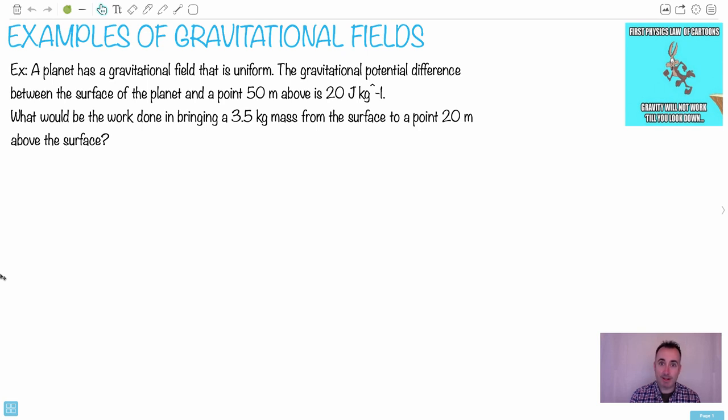Let's actually deal with something that's a real kind of question you could be asked on an exam. A planet has a gravitational field that is uniform. The gravitational potential difference between the surface of the planet and a point 50 meters above is 20 joules per kilogram. That sounds a little bit crazy already. You're probably starting to worry and hopefully not feeling like holding up a little sign that says help. What would the work done be in bringing a mass from the surface to another point? You might be thinking of throwing up already.